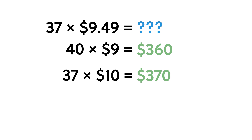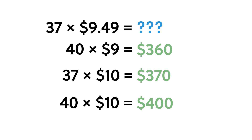In fact, rounding the price up has an added benefit: by rounding up, you guarantee that your estimate is an overestimate — a total higher than the exact answer. Since the overestimate still falls within your $500 budget, you can be certain the exact price will be under $500. You can even round both the class size up to 40 and the price up to $10, getting an overestimate of 40 times $10 equals $400, also within budget. Now you know you can afford this vendor's price.